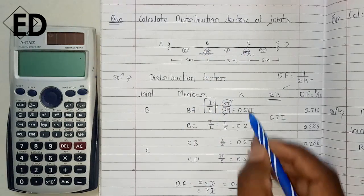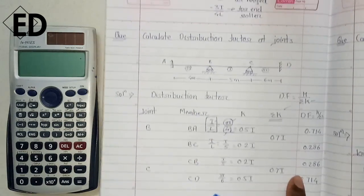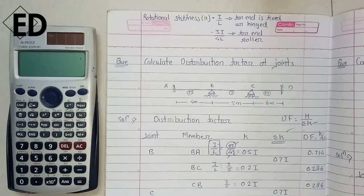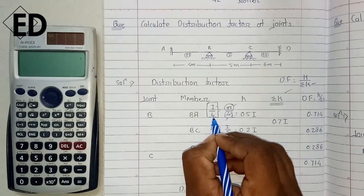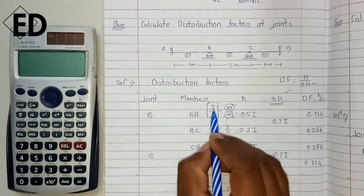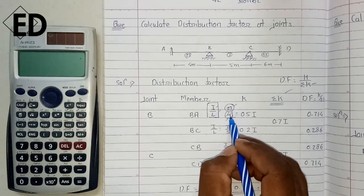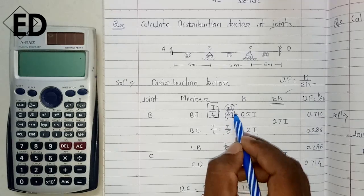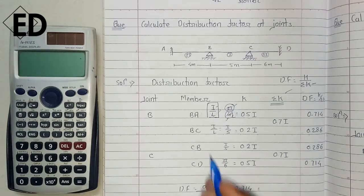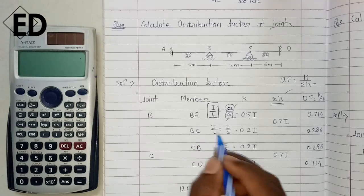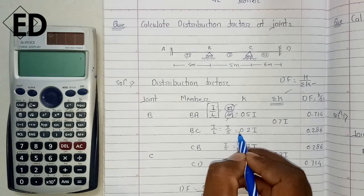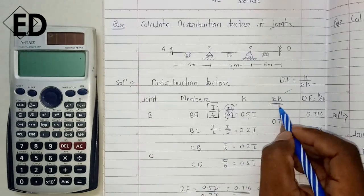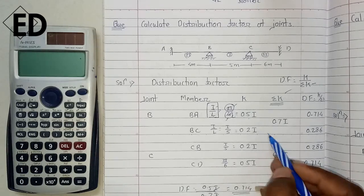Now calculating the rotational stiffness at joint B. When the far end is fixed, rotational stiffness is I/L. For beam BA, I = 2 and L = 4, giving us 0.5I. For beam BC, I = I and L = 5, giving us 0.2I. The summation of these two is 0.7I.